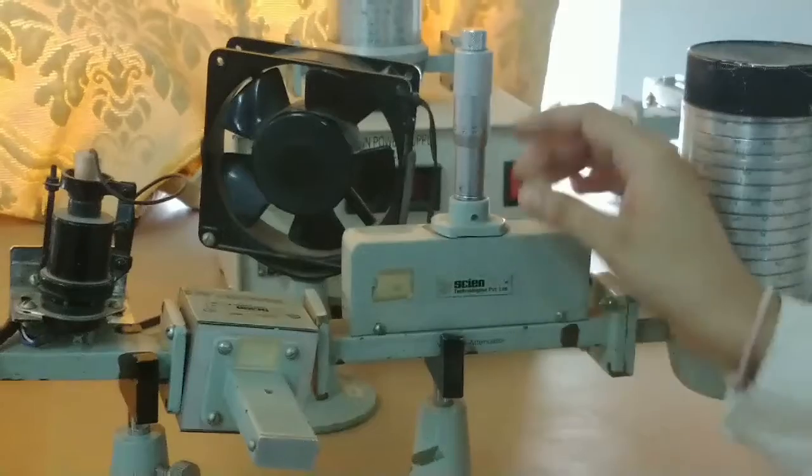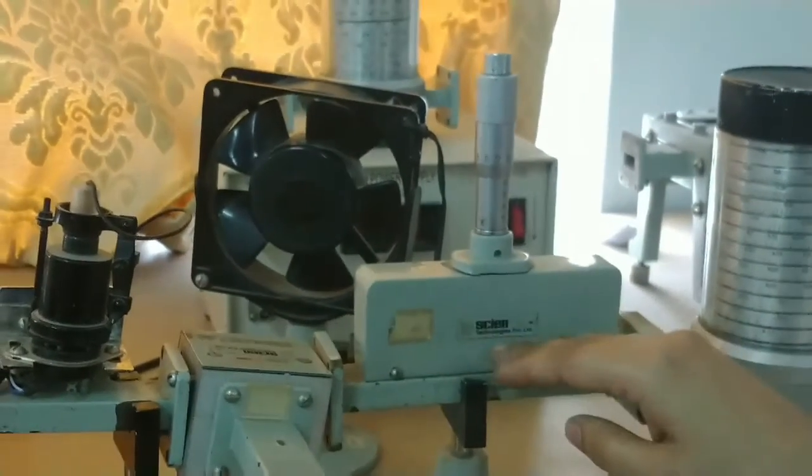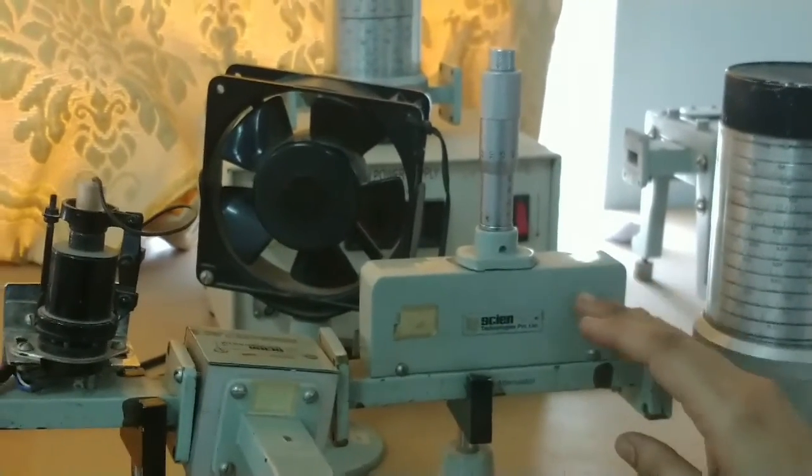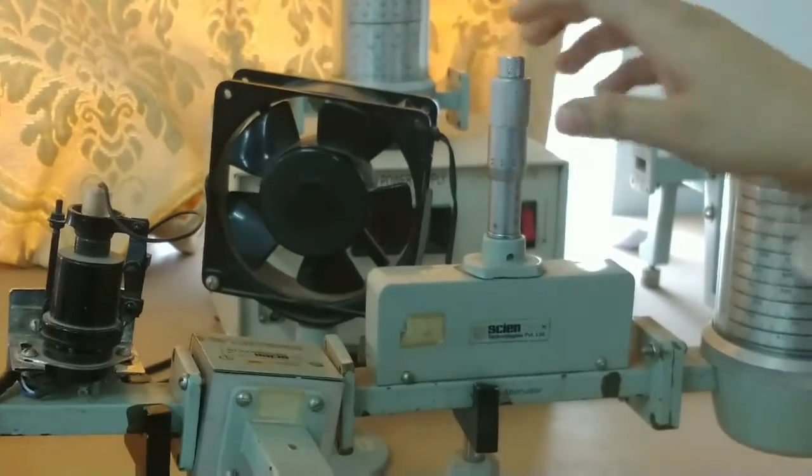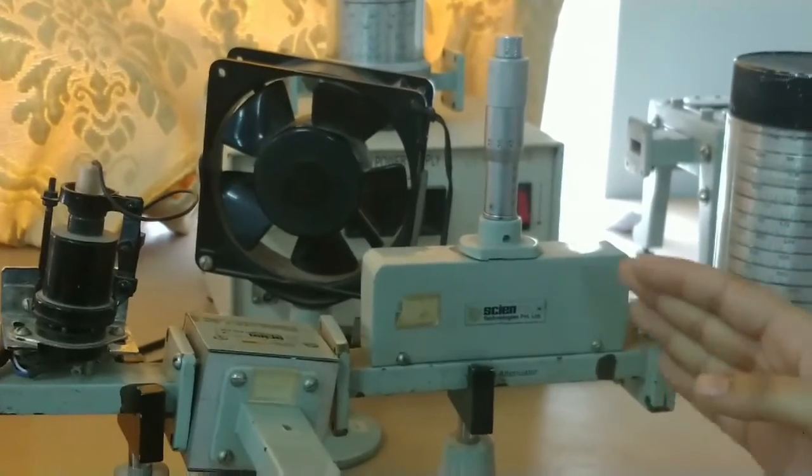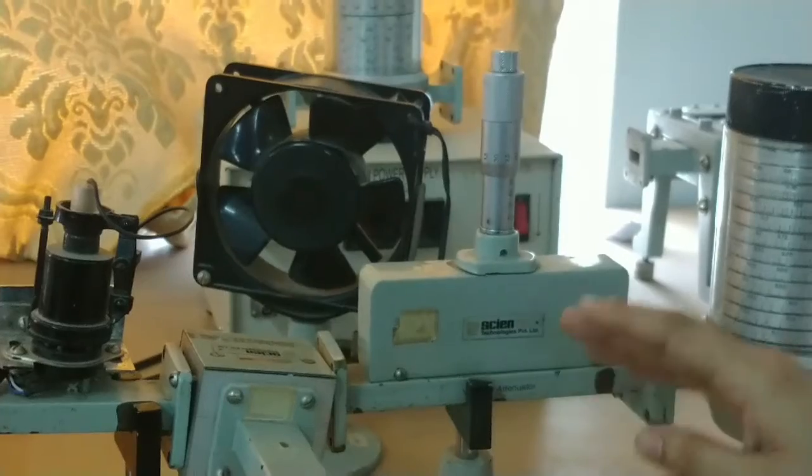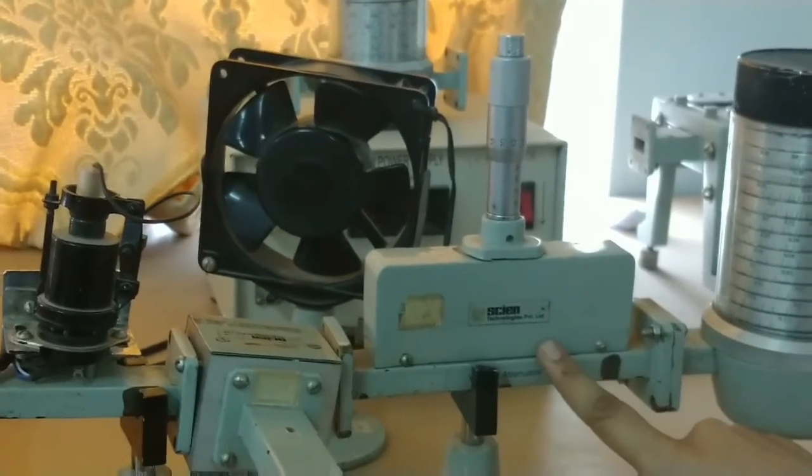Variable attenuator consists of a strip of absorbing material which is arranged in such a way that its insertion into the guide is adjustable. Hence the signal power transmitted into the microwave setup can be set at the desired level. This is also known as a flap attenuator.